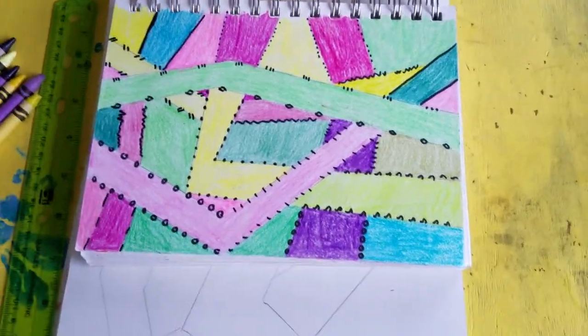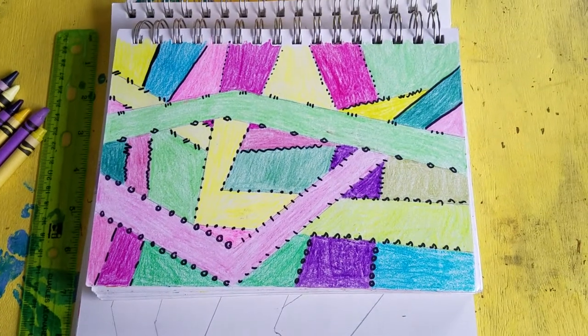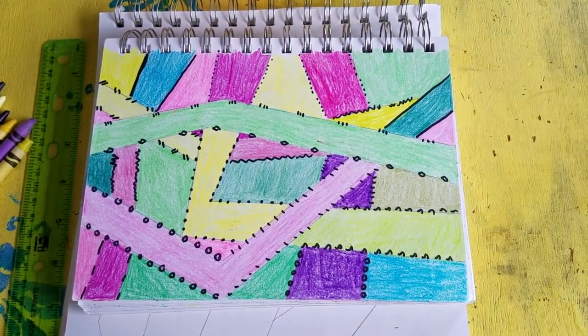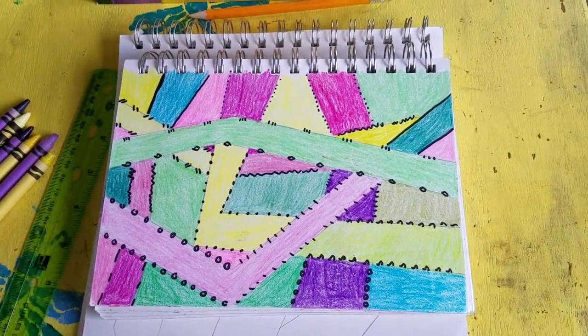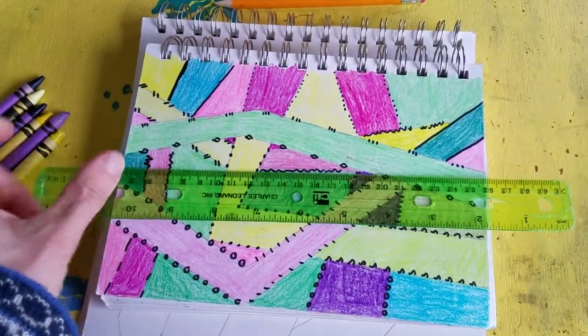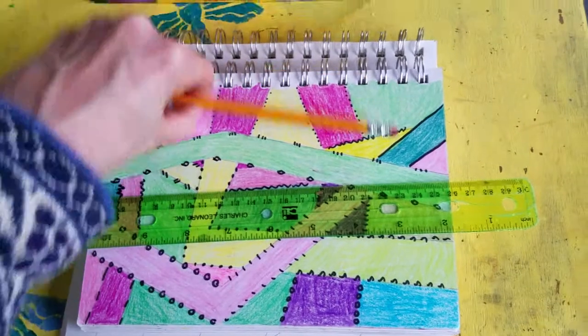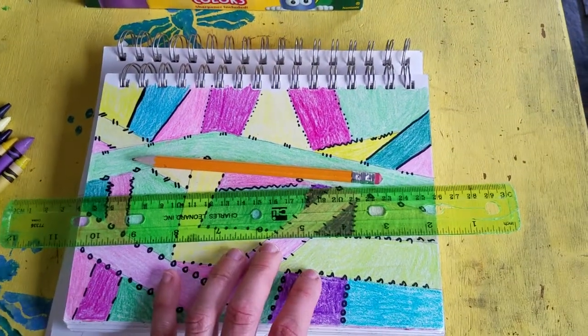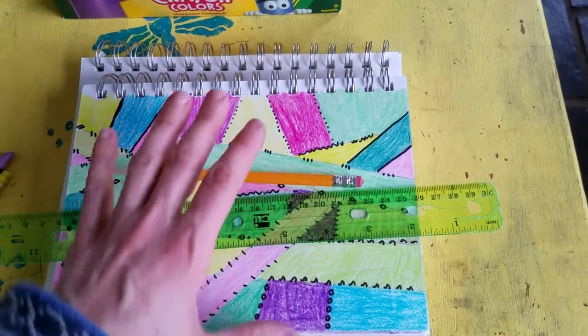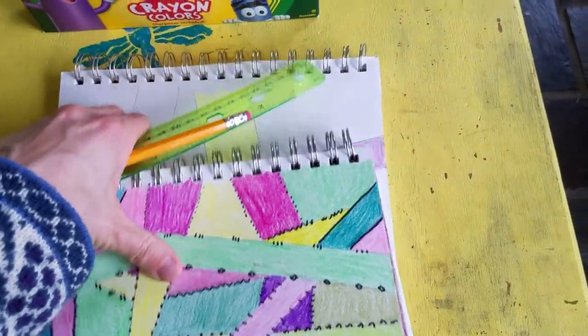So this is a geometric zigzag project and it allows kids to work with a ruler and a pencil and crayons. And for this project I focused on some complementary colors. So I'm going to just move this out of the way.